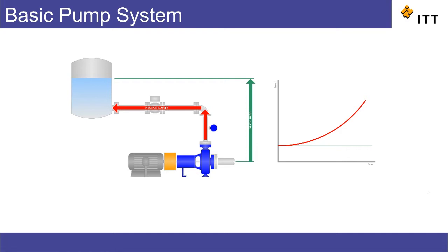So added together, these two make up the system curve, which is the red line on the right. The pump itself is defined by the blue pump curve, which dictates the combination of head or pressure and flow that the pump can produce.